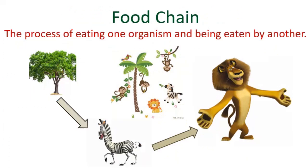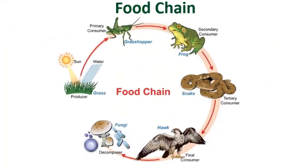You may say that a lion does not eat a plant directly, so it is not dependent on plants. That's not right, because a lion is going to eat a zebra which in turn eats a plant. So the lion is dependent on plants indirectly for its food. This process of eating one organism and being eaten by another is known as a food chain. In the food chain, the plant is the producer — the organism which is producing the food.